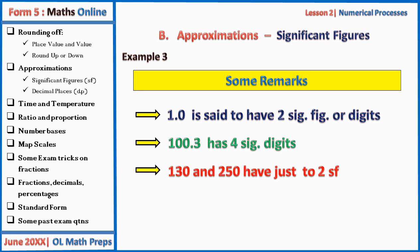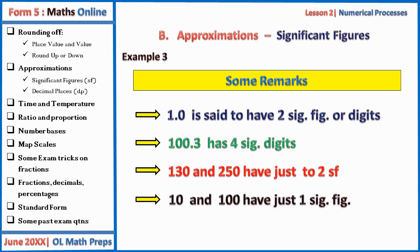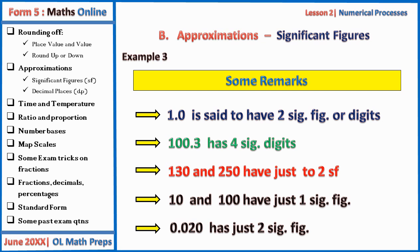Ten and one hundred each have just one significant figure, and one thousand similarly has just one significant figure. However, note that 0.020 — the first significant figure is two, and the zero that follows is significant — so 0.020 has two significant figures.